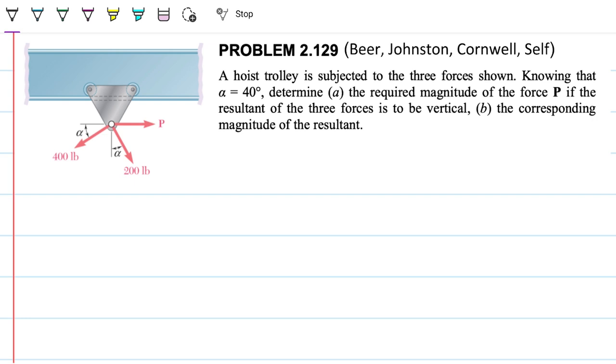Problem statement. A hoist trolley is subjected to the three forces shown. Knowing that alpha is 40 degrees, determine (a) the required magnitude of the force P if the resultant force of the three forces is to be vertical, and (b) the corresponding magnitude of the resultant.